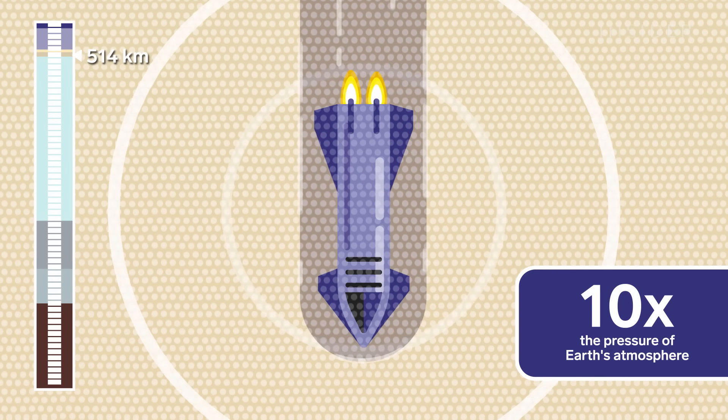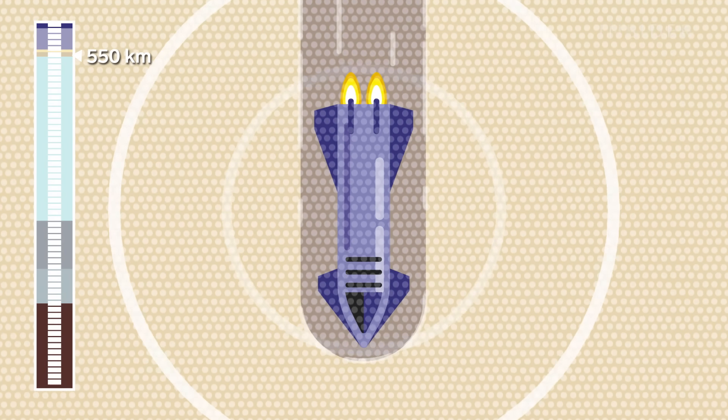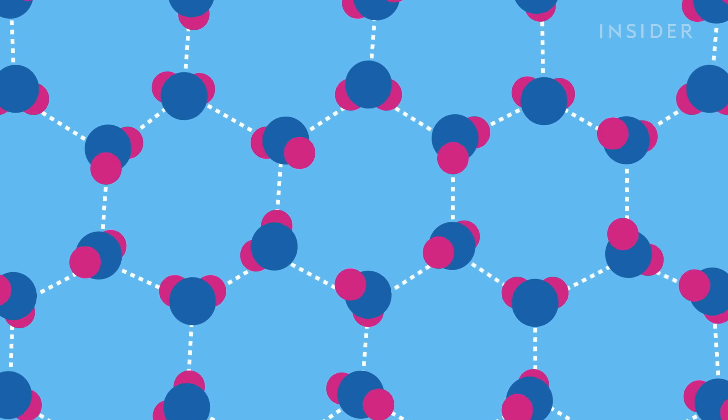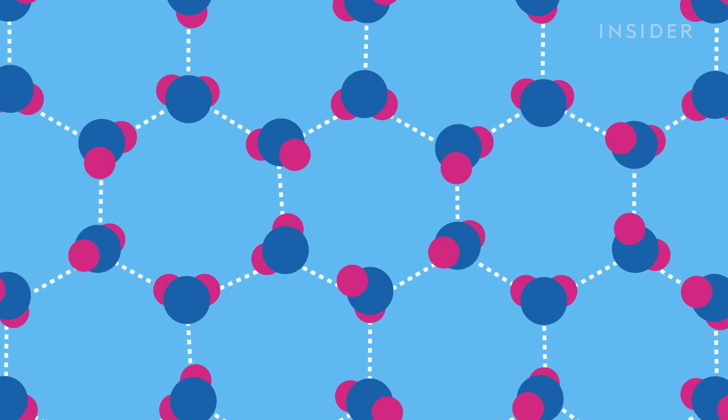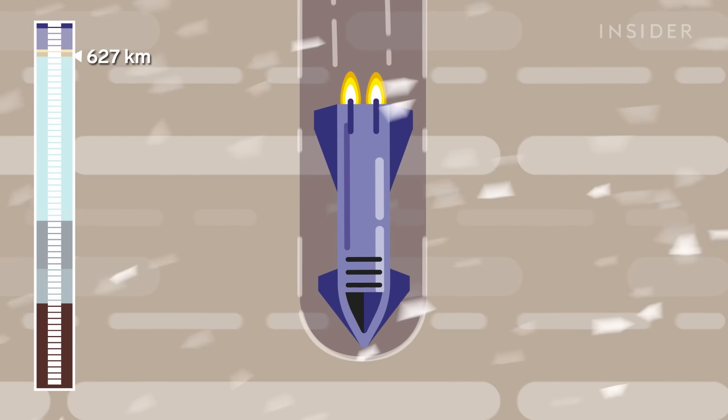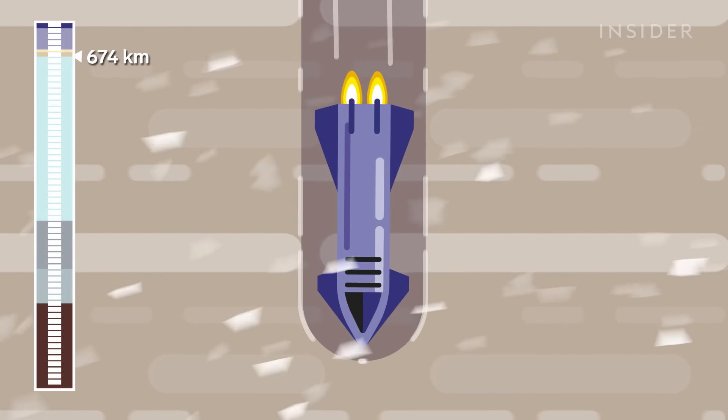And in this next layer, the pressure is so high it forces those liquid water molecules together, creating solid ice. That ice mixes in with surrounding gases. So get ready to fight through a flurry of hail.